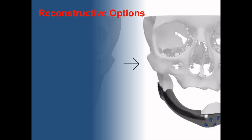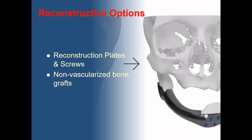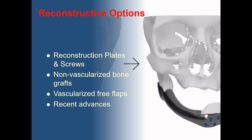The reconstructive options include reconstruction plates and screws; non-vascularized bone grafts, a subclassification of autogenous grafts where the graft depends solely on the recipient's vascularity and is indicated in defect sizes of less than 6 cm; vascularized free flaps with their own blood supply; and recent advances like medical modeling, transport disc distraction osteogenesis, and tissue engineering.